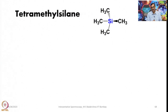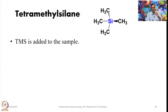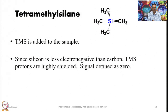In tetramethylsilane (TMS), four methyl groups surround a silicon atom in a tetrahedral fashion. TMS is added to the sample while measuring 1H as well as 13C and 29Si NMR. Since silicon has lower electronegativity than carbon, TMS protons are highly shielded and the signal is defined as 0. The resonance where it appears in the spectrum is given the value of 0, and we measure chemical shifts of all other molecules relative to this 0 value of TMS. TMS is used as the reference standard.